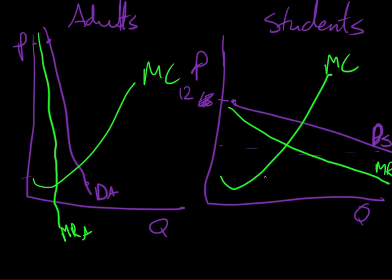If I look at what price will be charged and what quantity will be consumed, where MR equals MC will be my quantity of students. Here, my quantity of adults. What will be the price? Well, the price for the students here may be $8. And here for the adults, I'm going up and I might notice that for the adults it's $12.